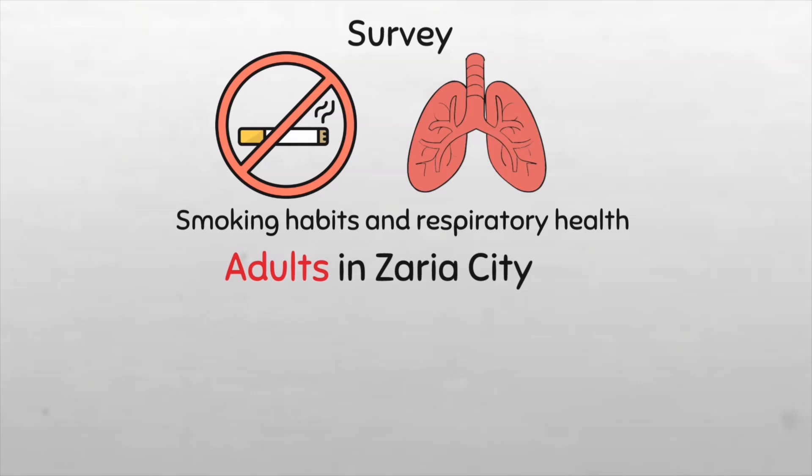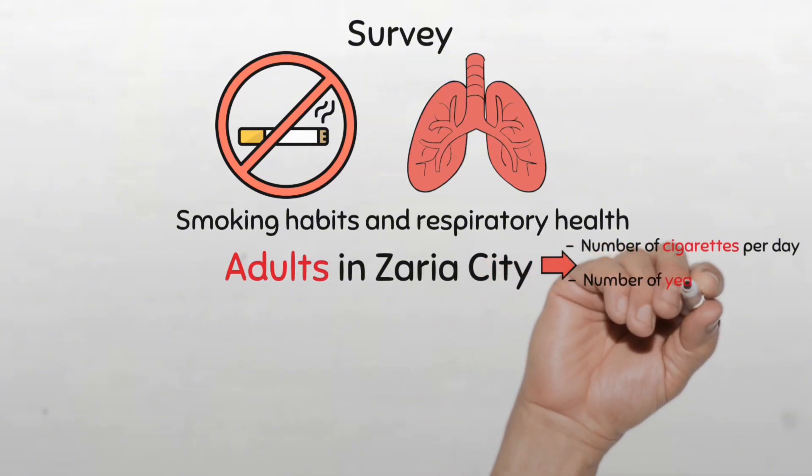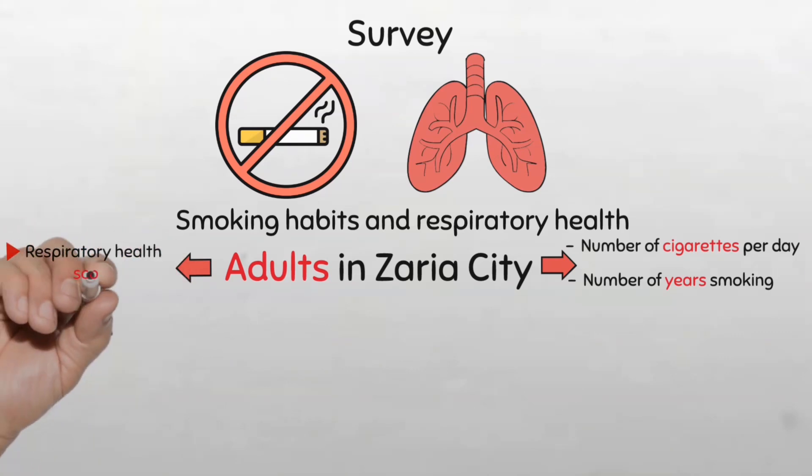He intends to collect data from each adult regarding their smoking habits and respiratory health status. He's going to be asking questions about their smoking habits, for example, the number of cigarettes smoked per day or how long they have been smoking in years. He wants to combine multiple variables to develop a score that represents the entire respiratory health of each individual. He's also interested in determining the pack years of smoking, which combines the number of packs of cigarettes smoked per day with the number of years a person has smoked.